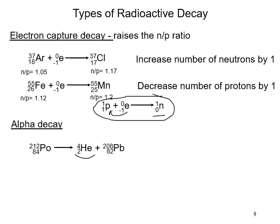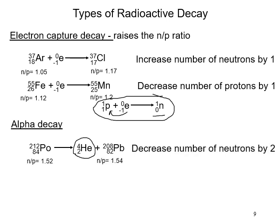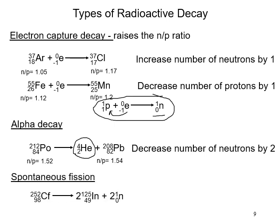Alpha decay is one of the most common processes for large, heavy nuclei — an alpha particle is ejected from the nucleus, decreasing the number of neutrons by two and protons by two. Spontaneous fission occurs when a very heavy, unstable nucleus splits into two intermediate-sized nuclei.